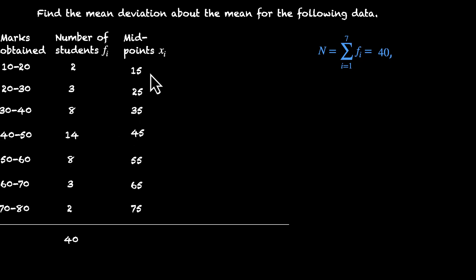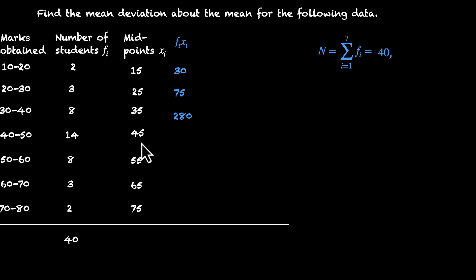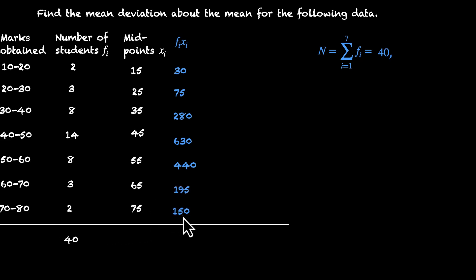Now let's find the mean by computing f_i × x_i for each class: 15×2 = 30, 25×3 = 75, 35×8 = 280, 45×14 = 630, 55×8 = 440, 65×3 = 195, and 75×2 = 150. Now we have all the f_i x_i values. We add them all up to get Σf_i x_i, then divide by 40 to get the mean.